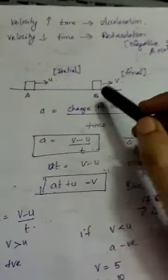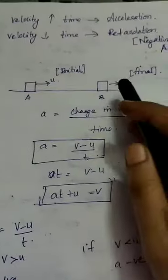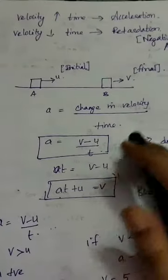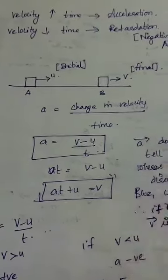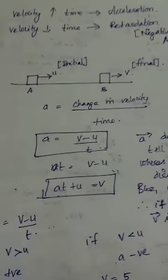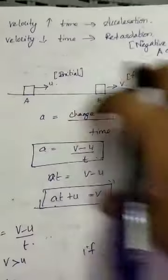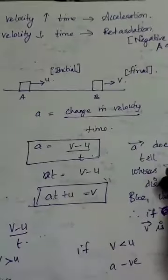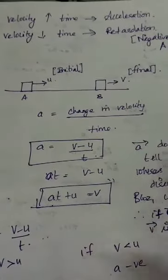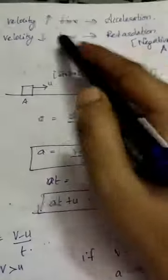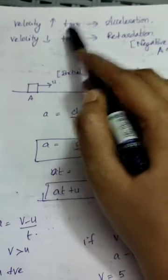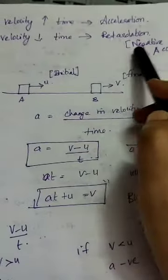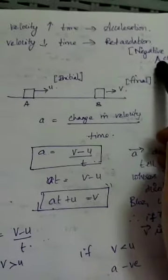Consider initially traveling at 50 km/h. After 10 minutes I increase my velocity to 60 km/h — acceleration takes place and the velocity is increasing. When velocity increases with respect to time, I define it as acceleration — positive acceleration.